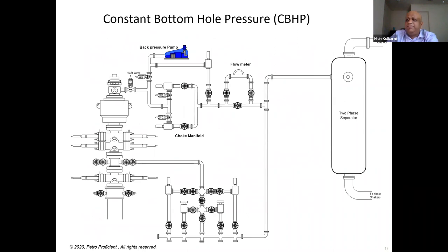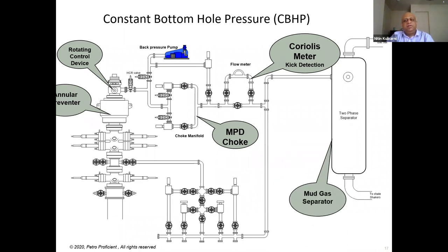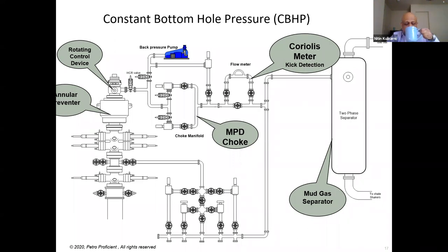A typical MPD setup starts with the rotating control head, then the choke manifold, the Coriolis meter which does kick detection, the annular preventer as part of the BOP stack, and the mud gas separator. These are the key components, though in reality the setup is quite complicated with a number of valves that all need to be numbered and operated from time to time in order to line up a particular flow path.